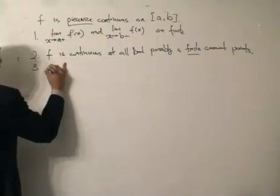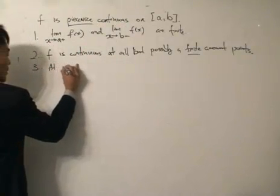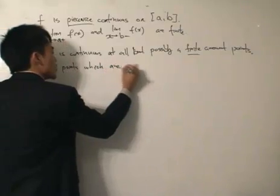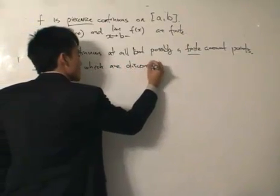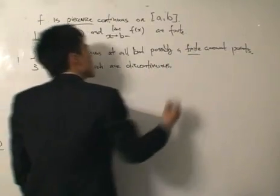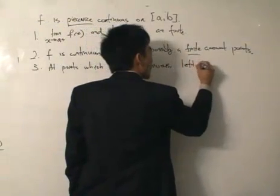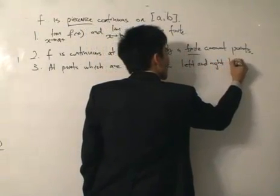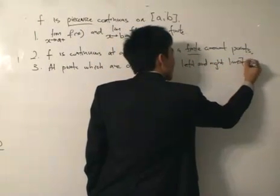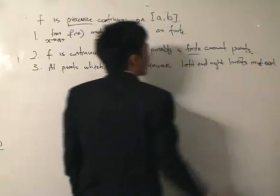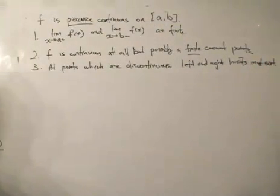And condition number three: at points which are discontinuous, the left and right limits must exist and must be finite. So what are the left and right limits? I'm going to define them right now.